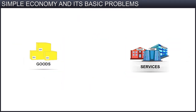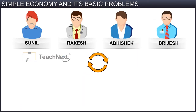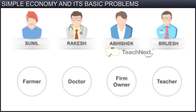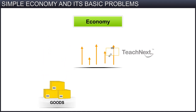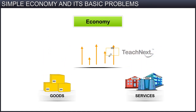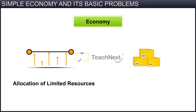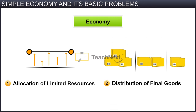Once the goods and services are produced, they have to be sold in the market. In the economy, it is much more complex because there are unlimited goods and services available. Therefore, we observe that the allocation of the limited resources available to the economy and the distribution of final goods are the two basic economic problems faced by an economy.